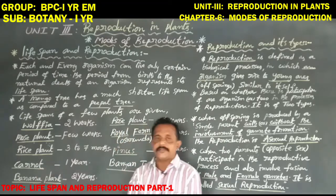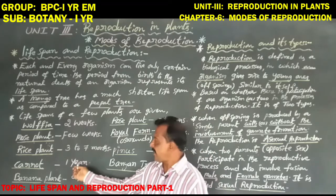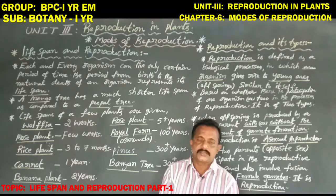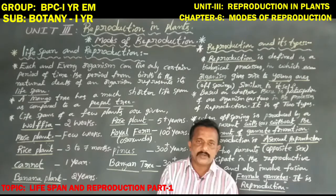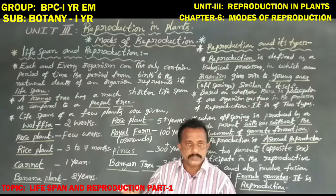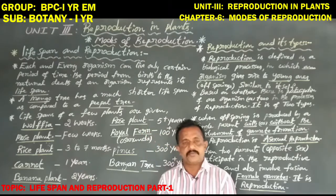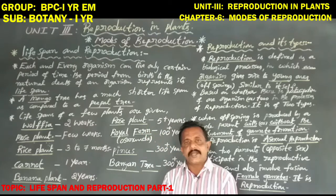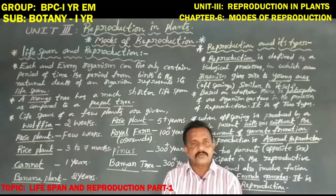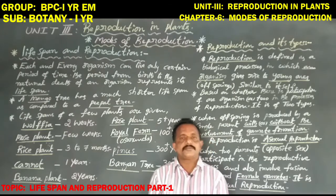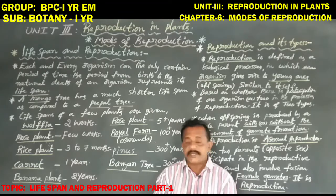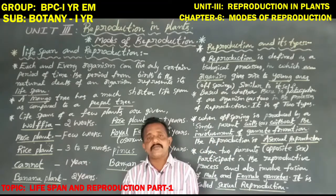Next, coming to the carrot plant. This is a biennial plant and its life span is one year, that is twelve months. Generally, this is a biennial plant, but the farmer is always harvesting it at the end of the first year. So its life span is considered to be one year — that is, annual. Carrot, radish, and similar plants are biennials, but farmers harvest them at the end of the first year, so that life span is annual.